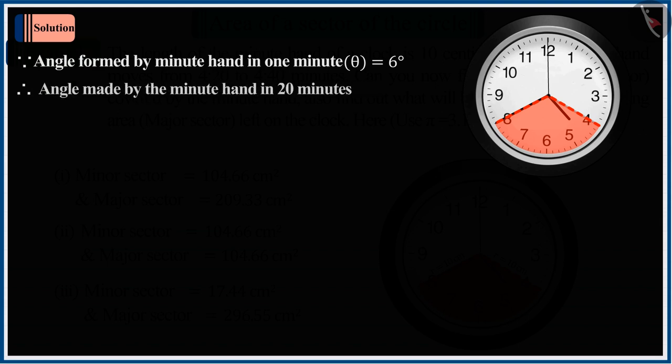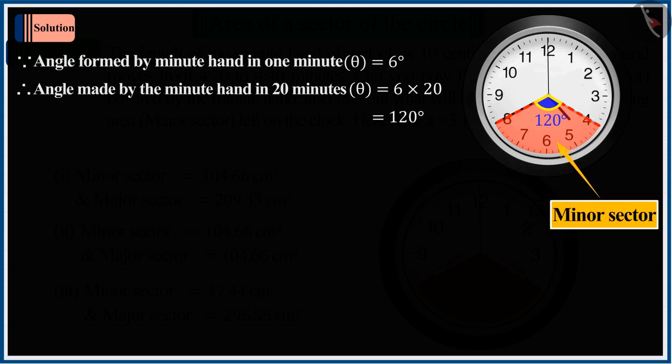So, the angle made by the minute hand in 20 minutes would be 120 degrees. This diagram shows the minor sector of a circle.